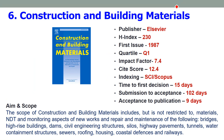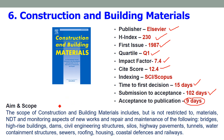Sixth is Construction and Building Materials, published by Elsevier with the highest H-index of 230. The first issue was published in 1987. It is also a Quartile 1 journal with an impact factor of 7.4 and a site score of 12.4. It is an SCI indexed journal. You will receive the first decision within 15 days and submission to acceptance takes about 102 days, about 3.5 months. After acceptance, your paper will be published within 9 days. The journal covers material research, NDT-related research articles, maintenance of bridges, high-rise buildings, dams, and civil engineering structures.